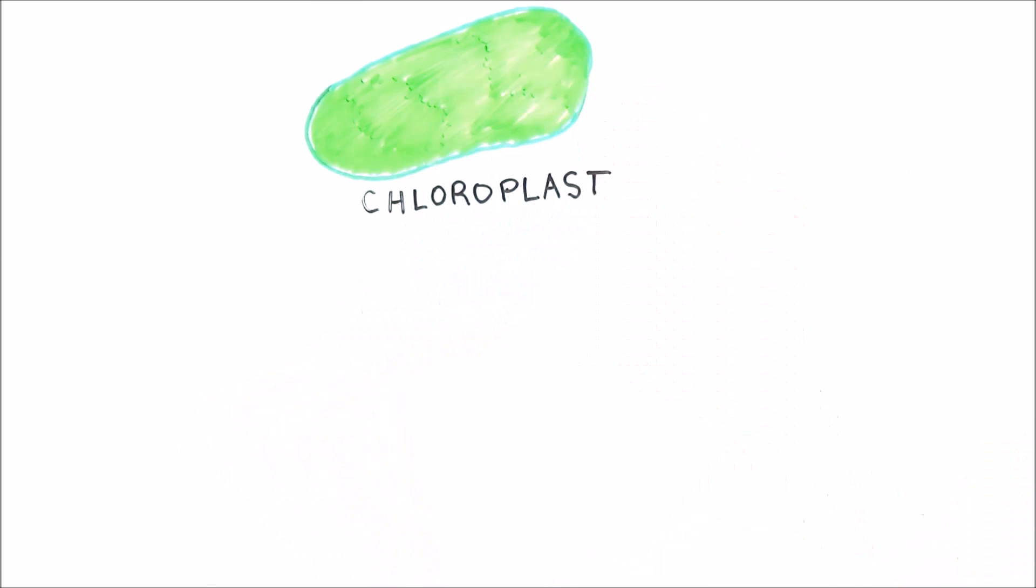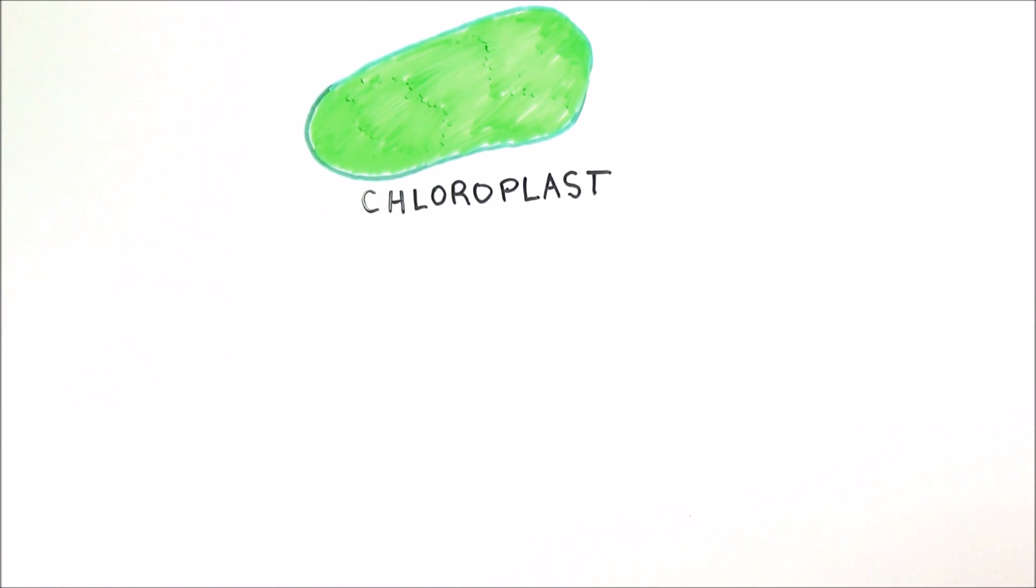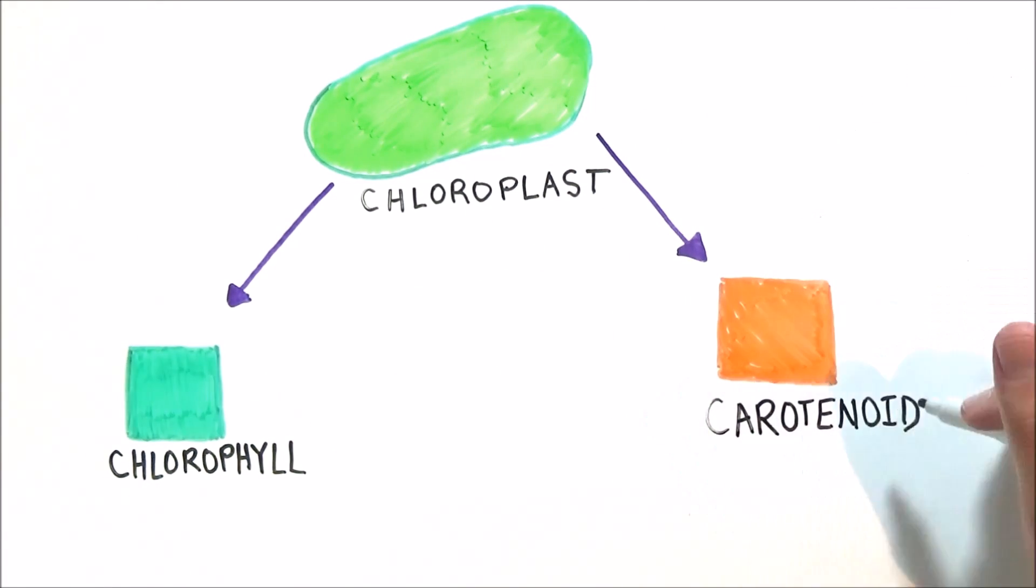Photosynthesis takes place in the chloroplasts of plants. Just a square millimeter of a leaf contains about 500,000 chloroplasts. The chloroplasts are responsible for a plant's color and contain green chlorophyll pigments as well as red, orange, or yellow carotenoid pigments.